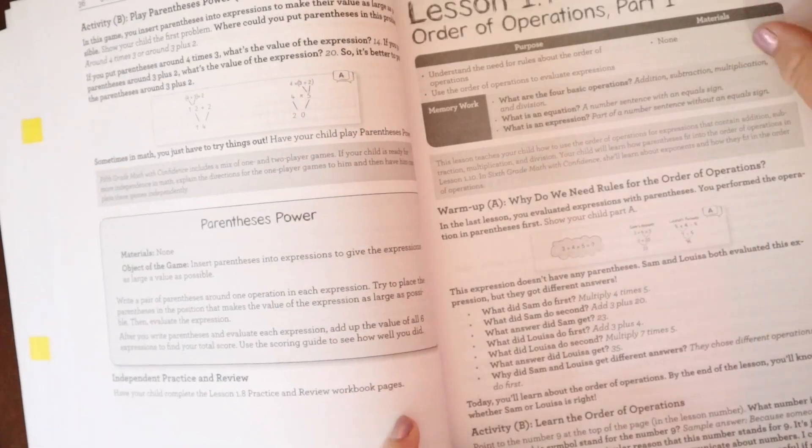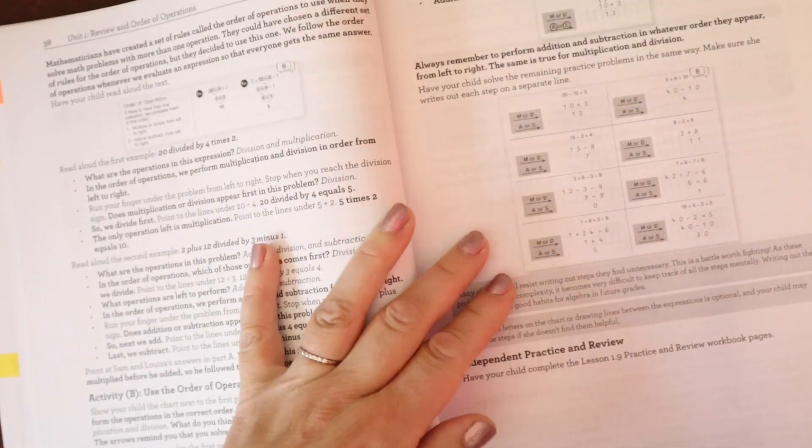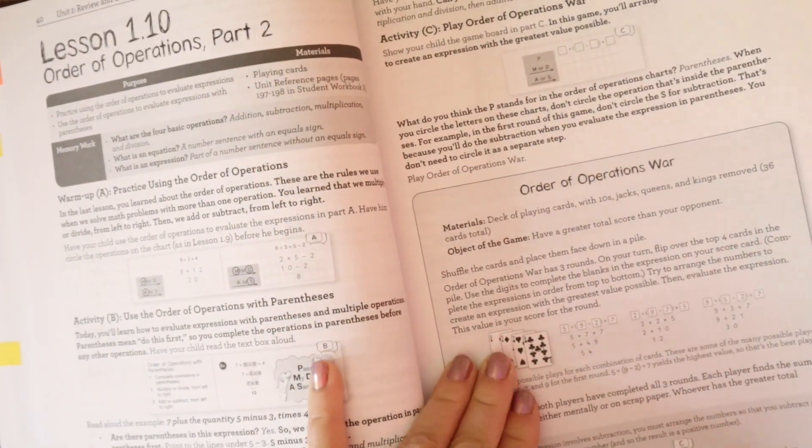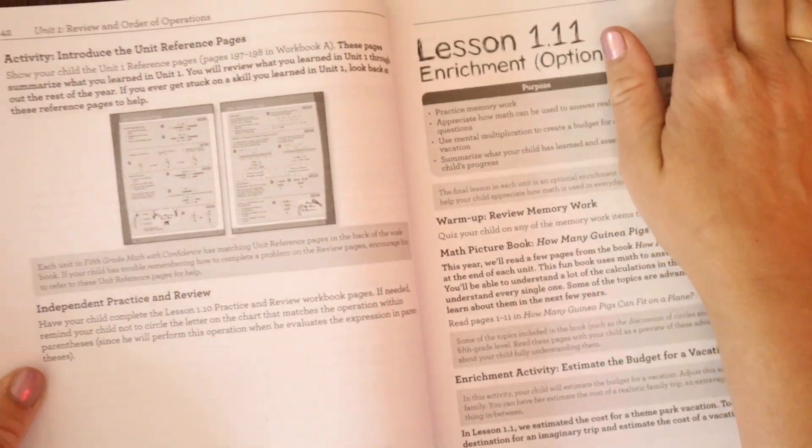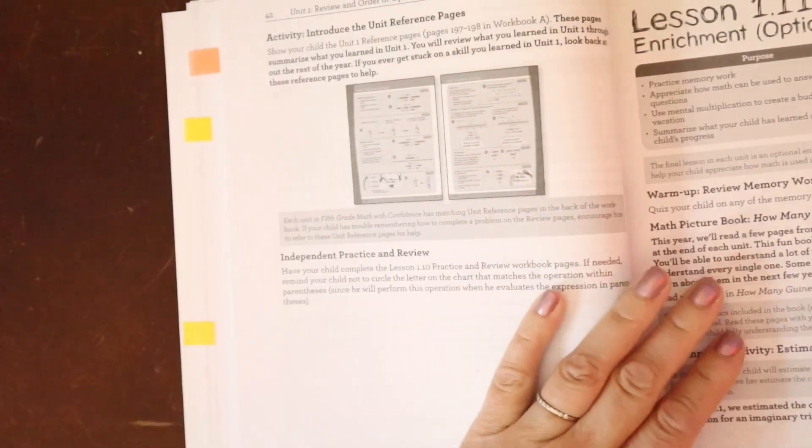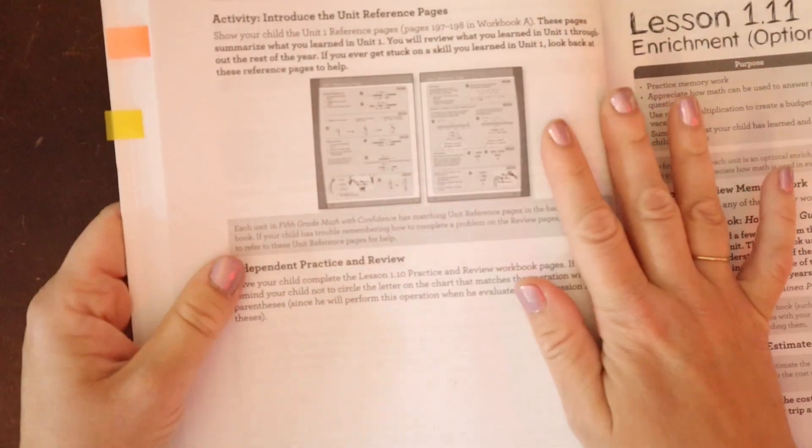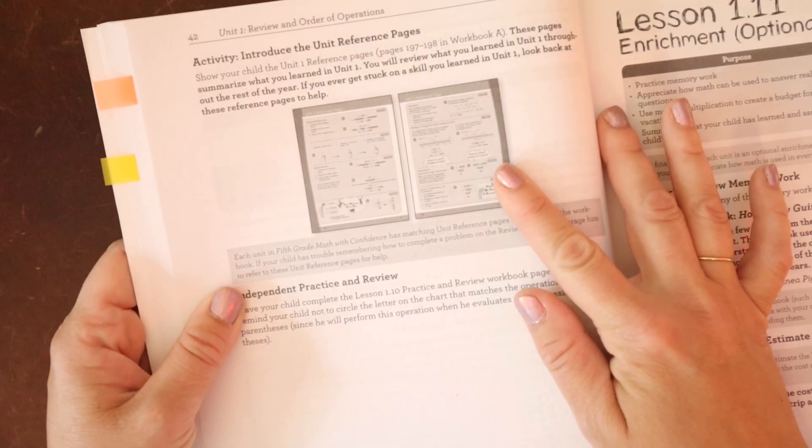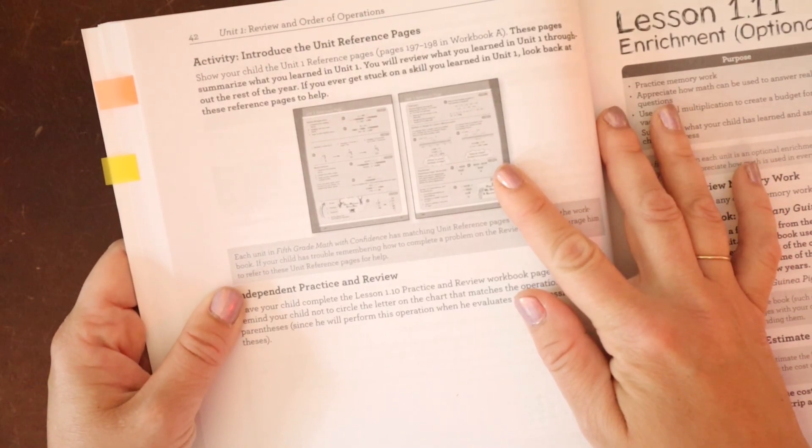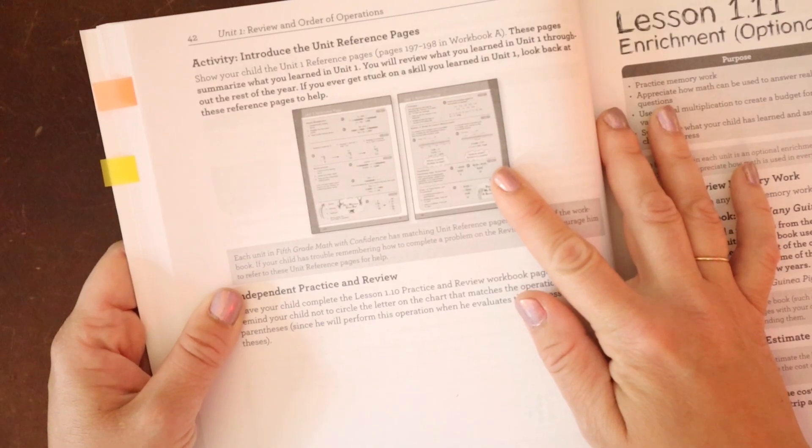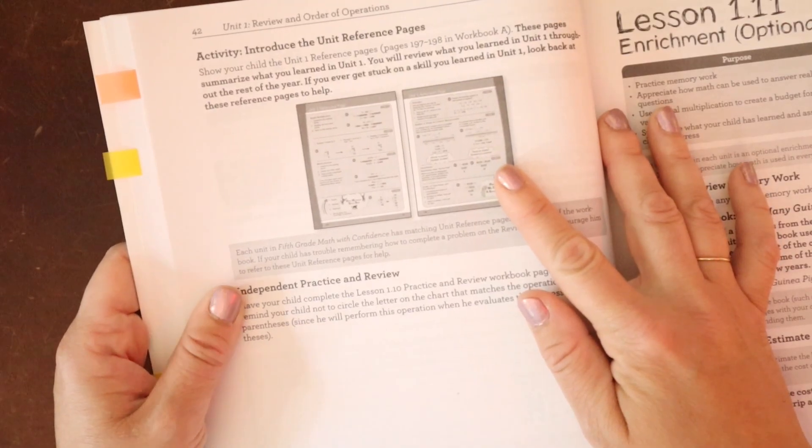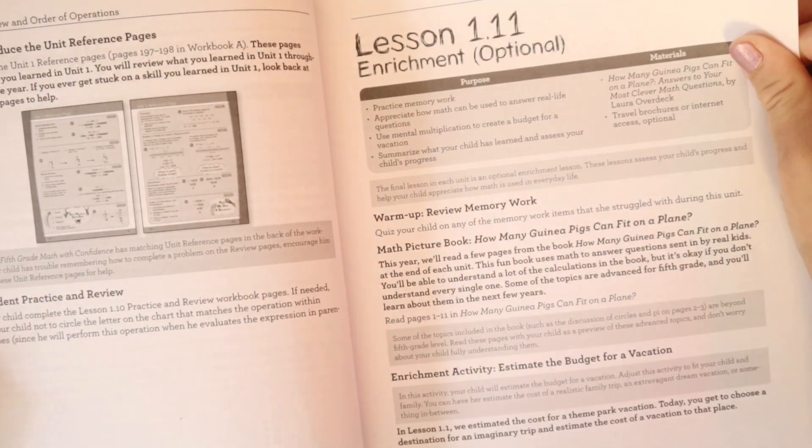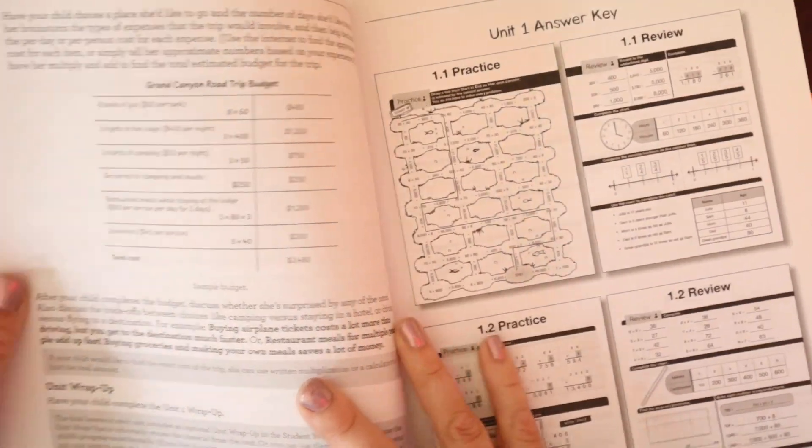Let's look through the rest of kind of this unit one here. So we have the activities like we were talking about. And we move into order of operations part two. There is a game here, order of operations war. And then it has an introduction to the reference pages. Show your child the unit one reference pages. These pages summarize what you learned in unit one. You will review what you learned in unit one throughout the rest of the year. If you ever get stuck on a skill you learned, look back at these reference pages, and then they have your enrichment option and your unit wrap up.